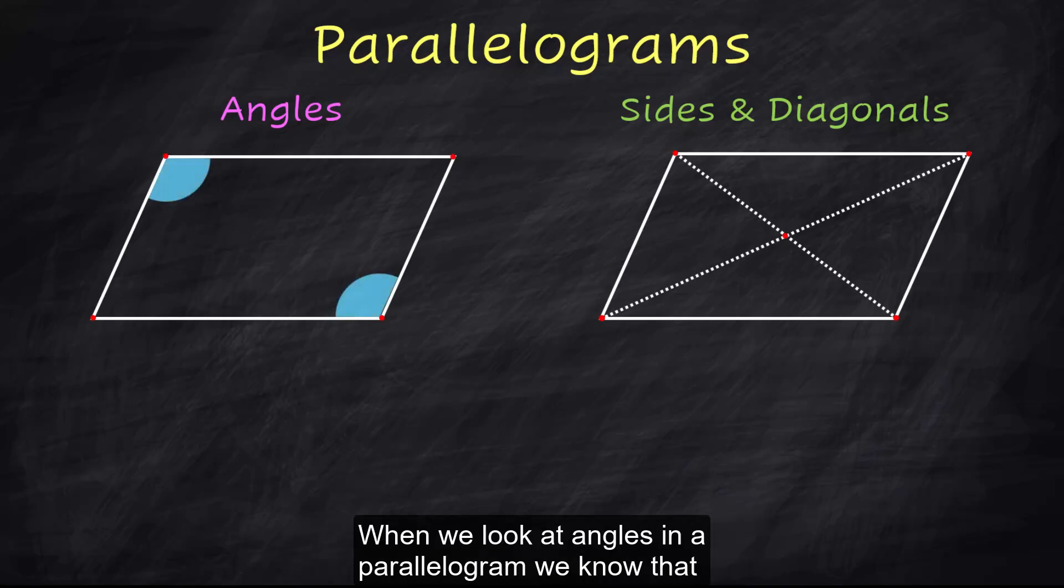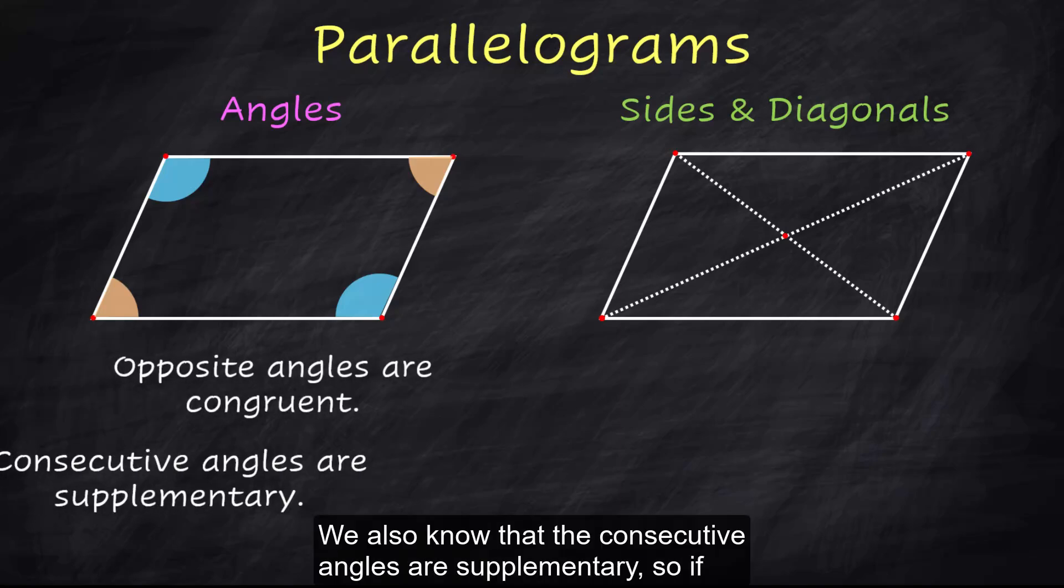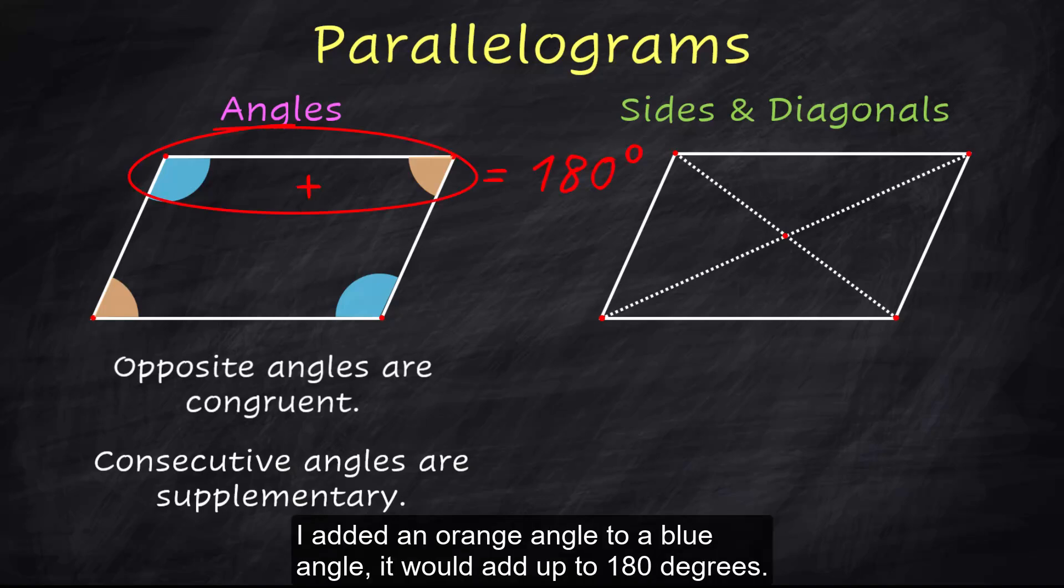When we look at angles in a parallelogram we know that opposite angles are congruent. We also know that the consecutive angles are supplementary so if I added an orange angle to a blue angle it would add up to 180 degrees.